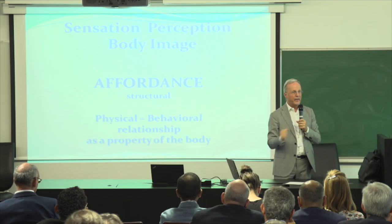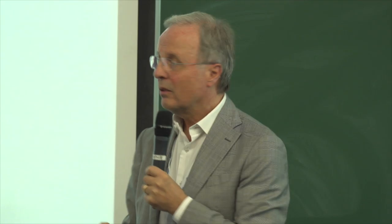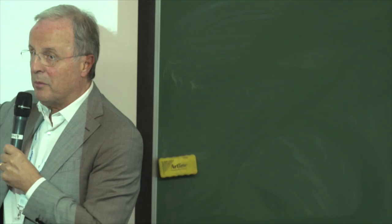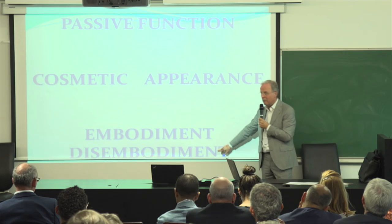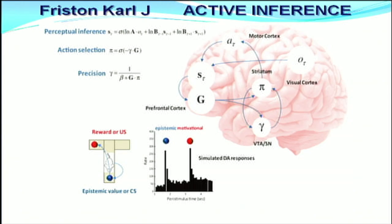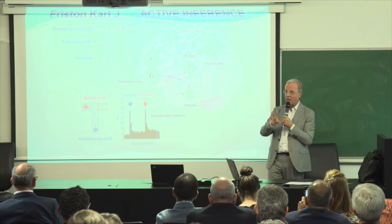Due to body image and affordance: when we say 'the test is okay, you demonstrated the ability to grasp and release a glass,' and then ask the patient 'but do you use it during your daily life?' — the answer is no. Why? Because it may be a mix of body perception and the problem of affordance. Affordance is the feeling of being able to use something — not just the ability to do it. So we move from the problem of passive function and cosmetic appearance to the problem of embodiment and disembodiment.